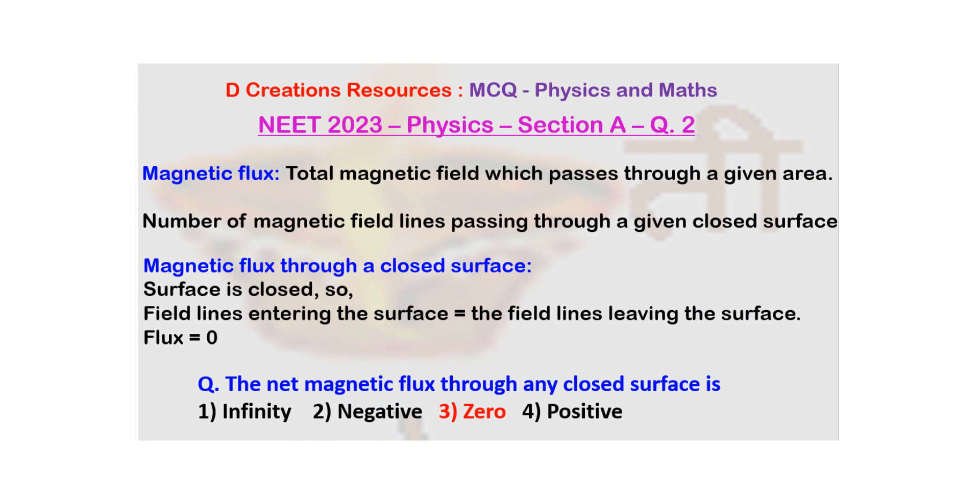So here, the answer is option number 3. The net magnetic flux through any closed surface is 0. Thank you.